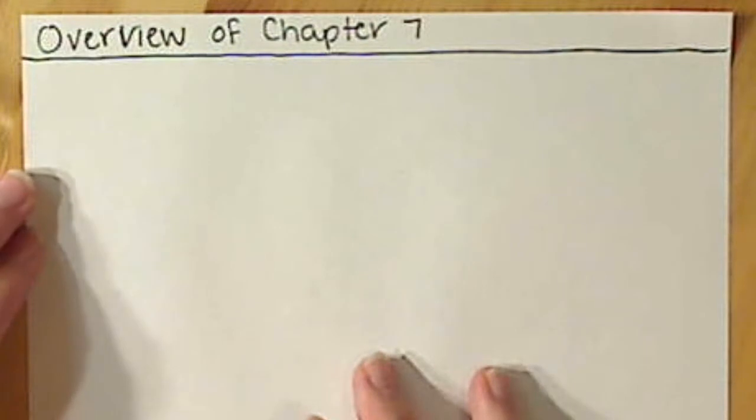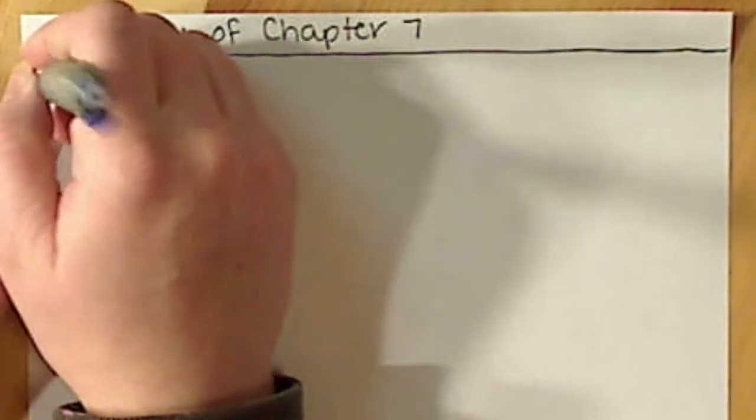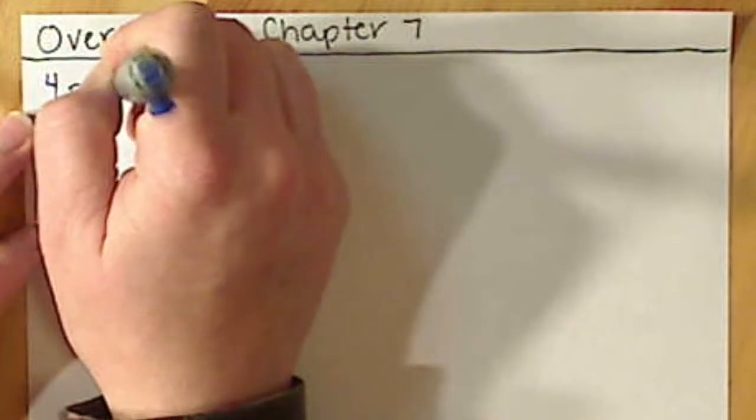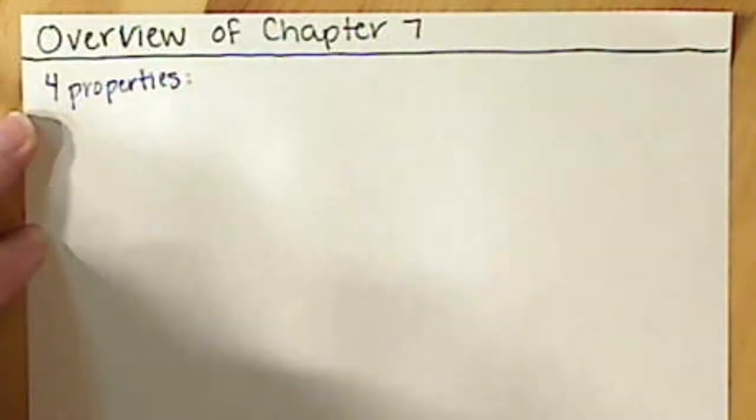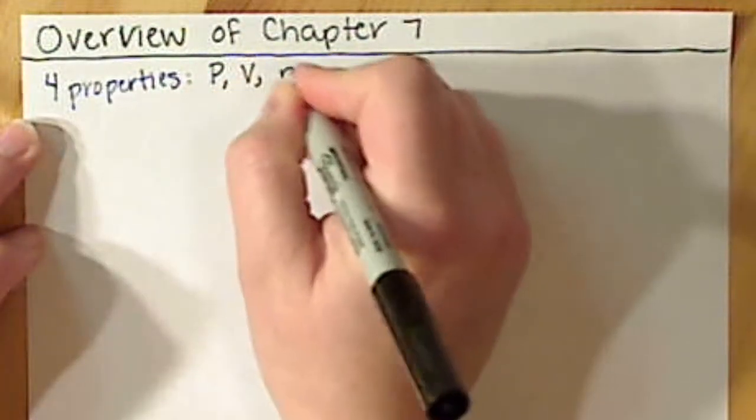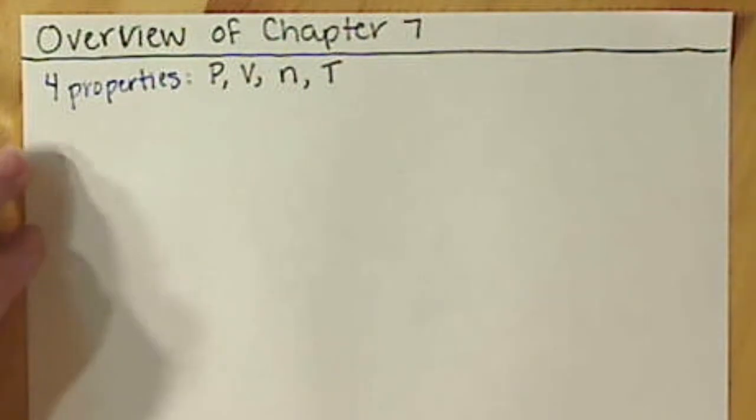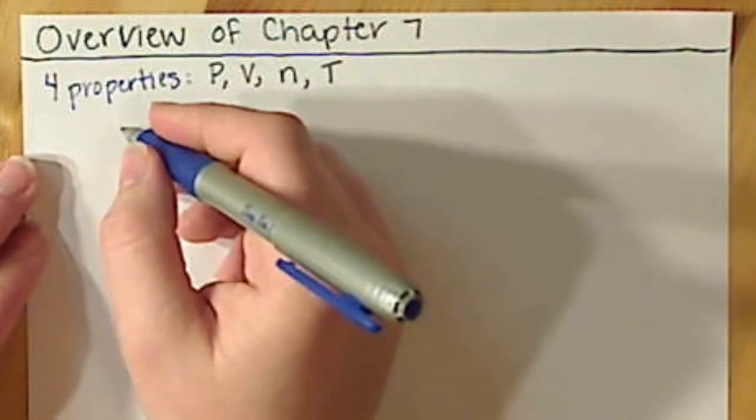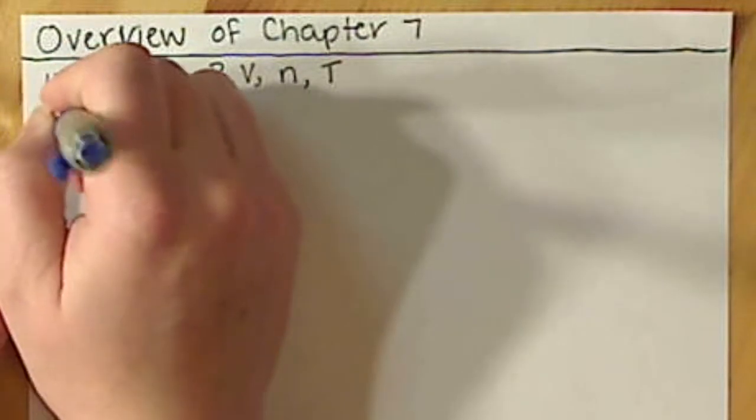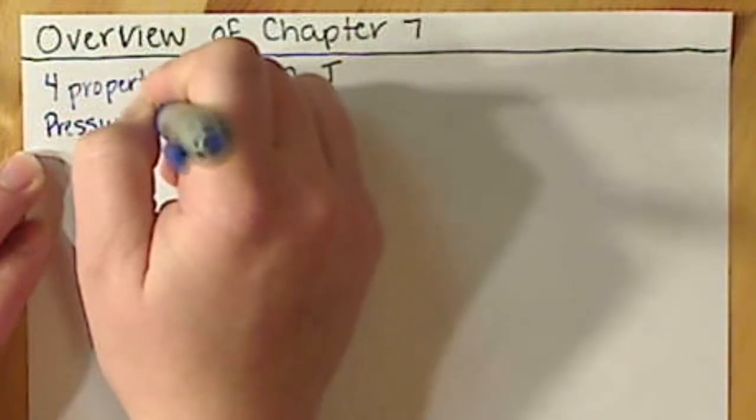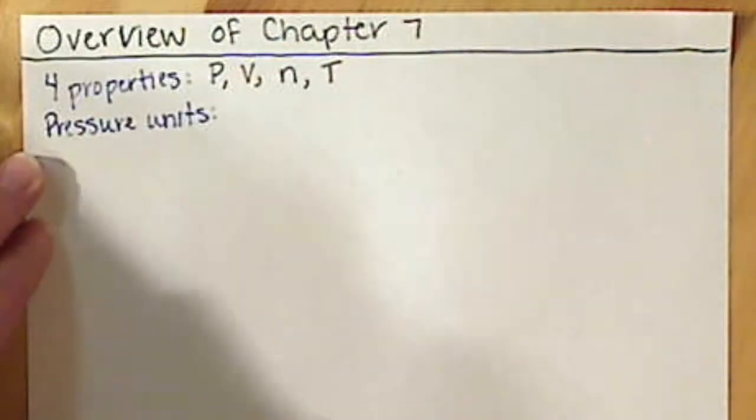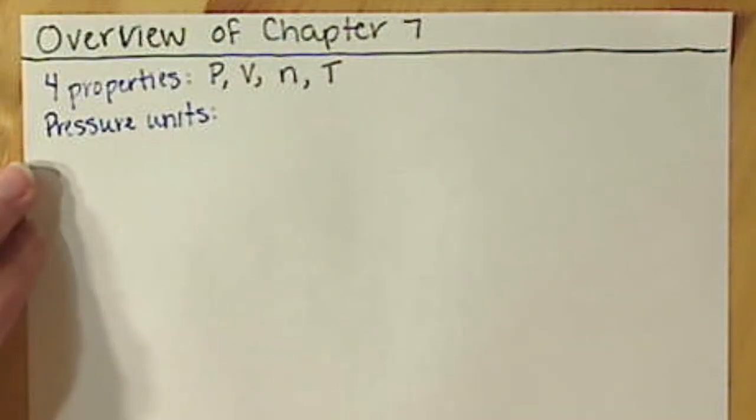Basically what you need to know are the four properties of gases, and that's pressure, volume, the amount of gas, and temperature. The other thing also coming from that written lecture are your pressure units, and there's actually nothing new there, no new concepts, just new conversion factors. It still follows the same rules that we learned in Chapter 1, but basically you're looking at conversions of your pressure units.